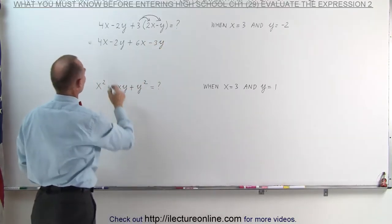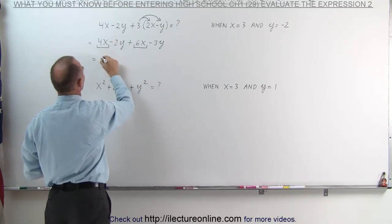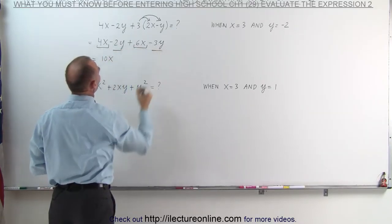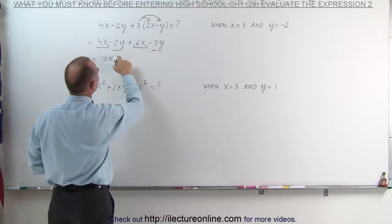Now we're going to combine like terms. First of all we can combine the terms that have an x in them. This becomes equal to 4 plus 6 which is 10x and then we can combine the terms that have a y in them. Minus 2 minus 3 which is minus 5y.